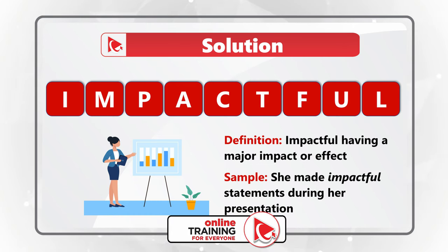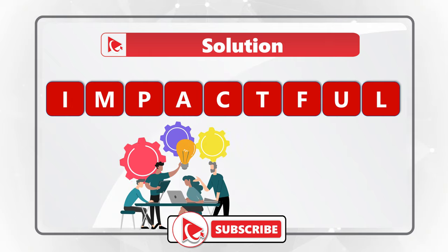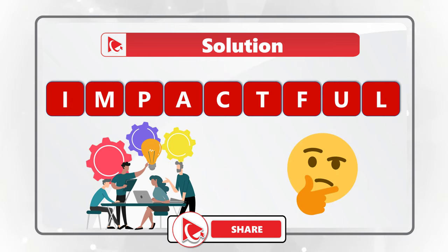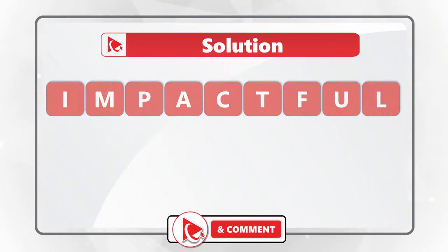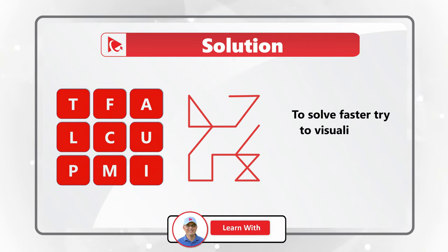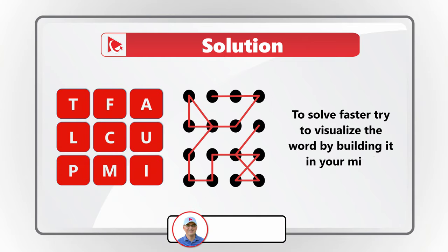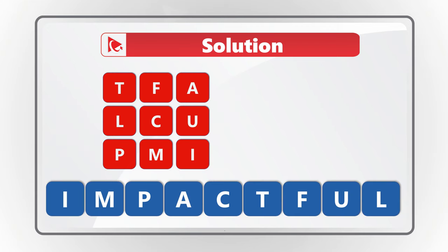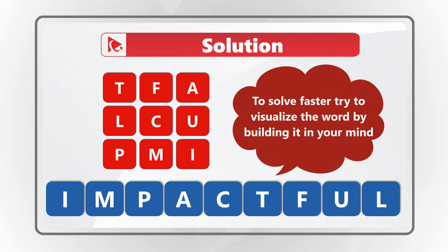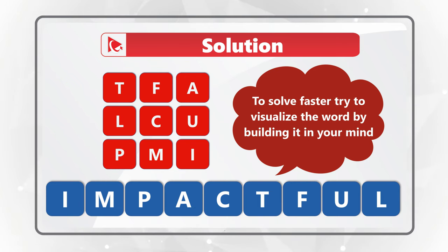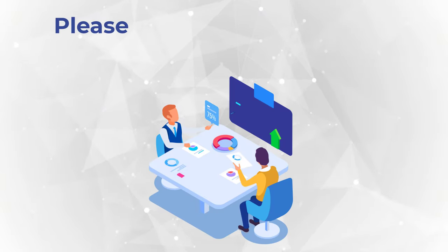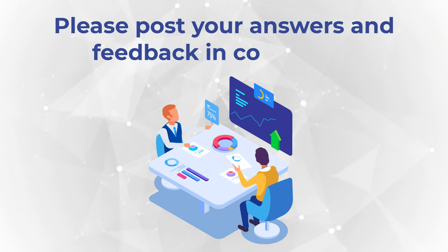The best way to solve these letter puzzles is to draw lines connecting the letters and see if you can form the word. In this case, letters next to each other in the real word are also next to each other in the test question — connecting I, M, P, A, C, T, F, U, L gets you to the correct solution.